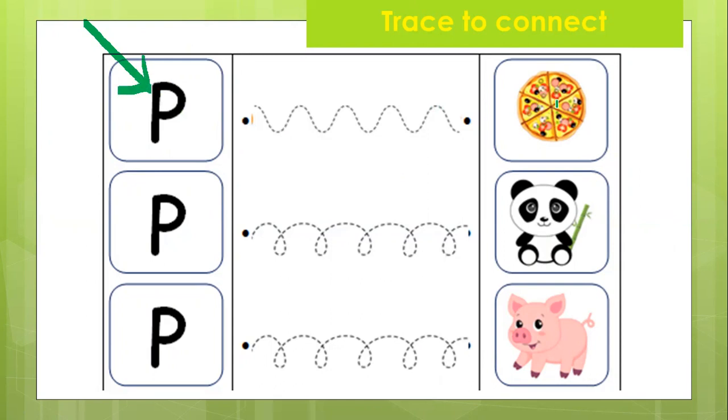P is for pizza. So let's trace to connect P to pizza. Trace along the line. Trace, trace, and trace up and down. Okay, P for pizza.